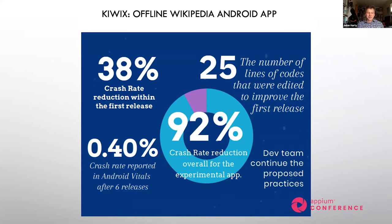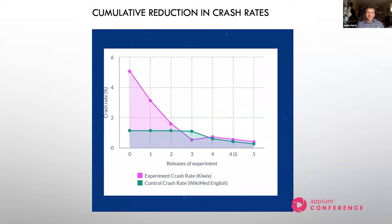We were able to reduce the crash rate down to about 0.4% after six releases, and the development team continued to use these practices for well over 18 months afterwards. Here's an overall presentation showing the reduction in crash rates. The purple line represents the application we picked for the experiment, and we deliberately left the rest of the applications unchanged until the third release — to see if improvements were random chance. Our work proved effective, and with the fourth release, we applied improvements from the first experimental app to the rest of the code base, with ongoing improvements.